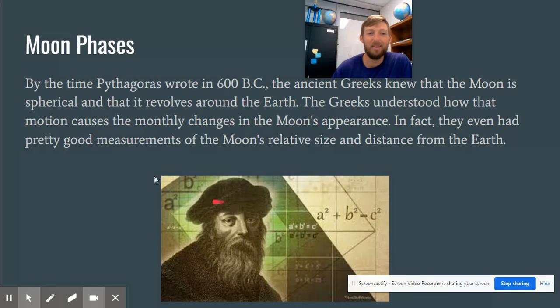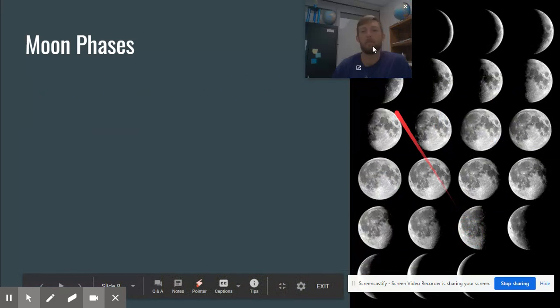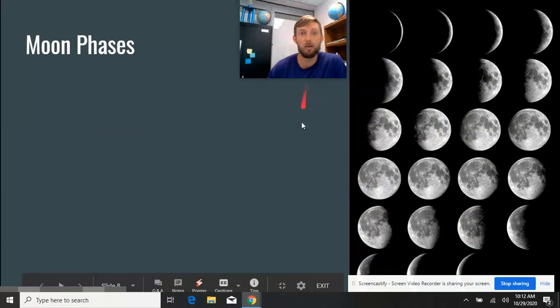So back in Pythagoras' time, the Greeks, they knew a lot of this. They knew that the Moon was a sphere and it rotated around the Earth. They understood how the motion of the Moon around the Earth changed the Moon's appearance. And they had a pretty good idea of how big the Moon was and how far it was from the Earth, which is crazy considering how long ago that was.